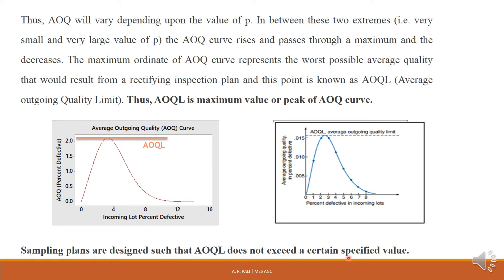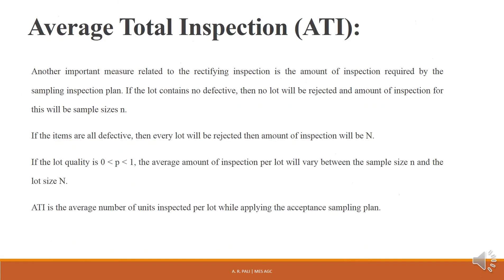Designing the plan itself includes specifying the value of the AOQL. Now, Average Total Inspection (ATI) is another important measure related to rectifying inspection — it is the amount of inspection required by the sampling plan, meaning the number of units inspected while applying it. If the lot contains no defectives, then no lot will be rejected and the amount of inspection will be the sample size n.